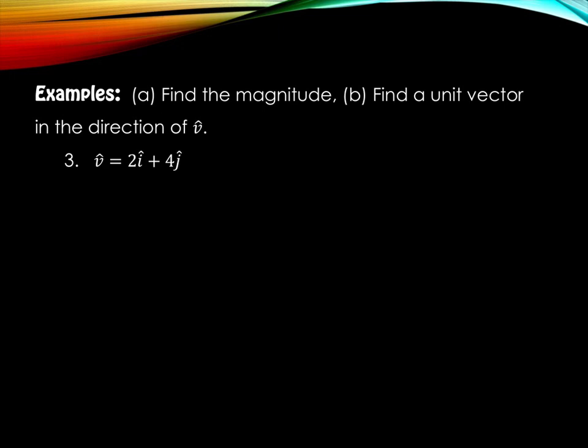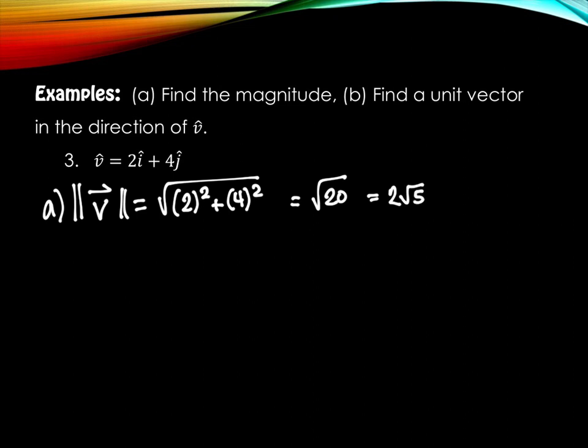So we're going to do some examples, some more examples like we did last time. We've already looked at how we go about finding magnitude. But part b here is something a little bit different. It wants us to find a unit vector in the direction of the vector we're given. Starting with the magnitude, do you remember how we did magnitude last time? The magnitude of vector v is going to be the square root of the individual components being squared. So what is 2 squared plus 4 squared? Square root of 20. And then if we can simplify square root of 20, how will it simplify? 2 square root 5. That's the magnitude.